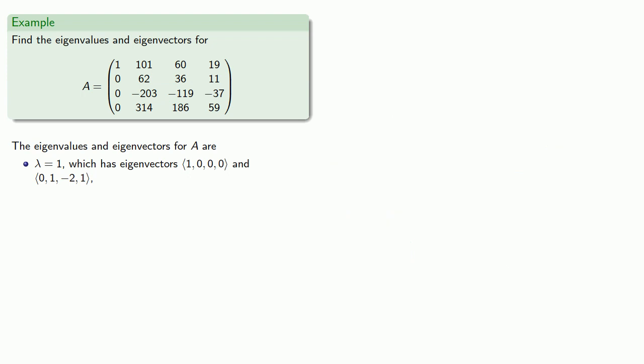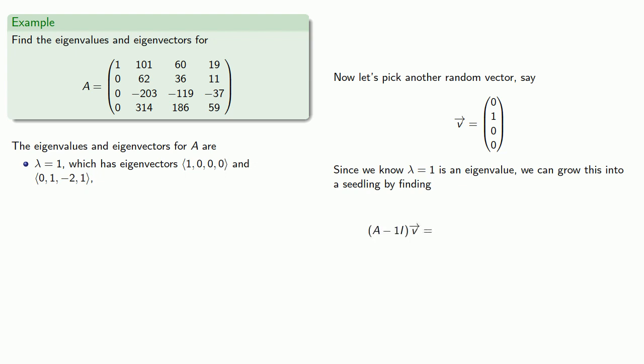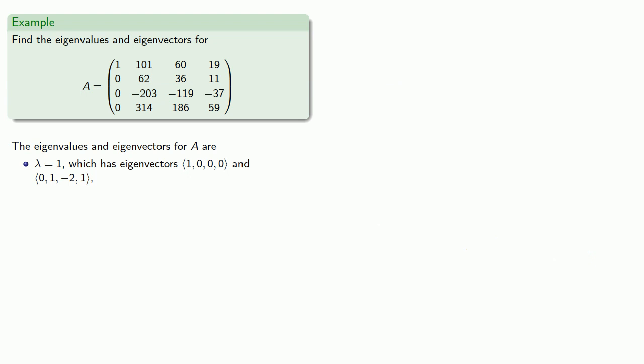Now because this is a 4x4 matrix, we could have up to 4 eigenvectors. So let's pick another random vector and this time we'll go with the exciting new vector. Okay so excitement is relative. But since we know lambda equals 1 is an eigenvalue, we can grow this seed vector into a seedling by finding A minus I applied to v. And this will be our seedling vector.